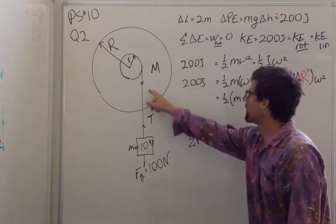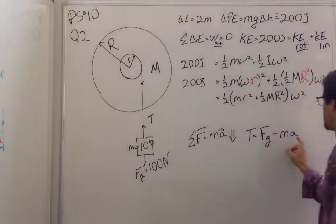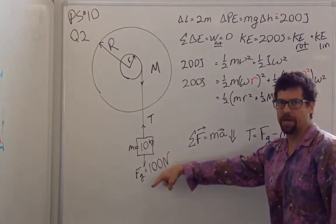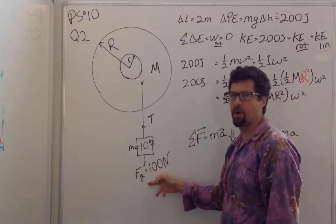The force left over for the tension is the force of gravity minus the force used up to accelerate this. If it's accelerating down, then the tension is going to be less than the force of gravity.